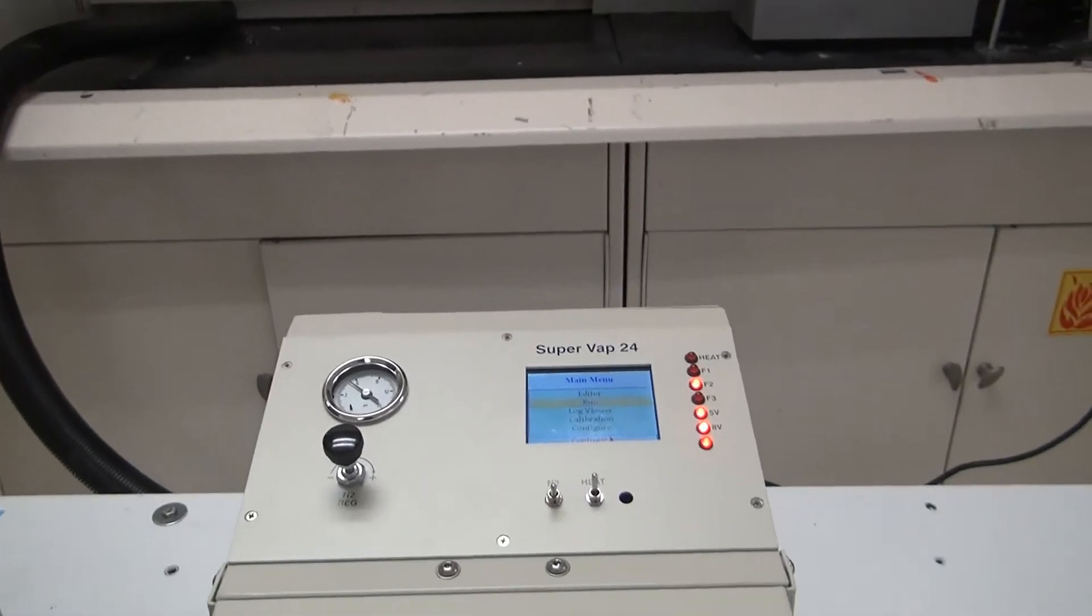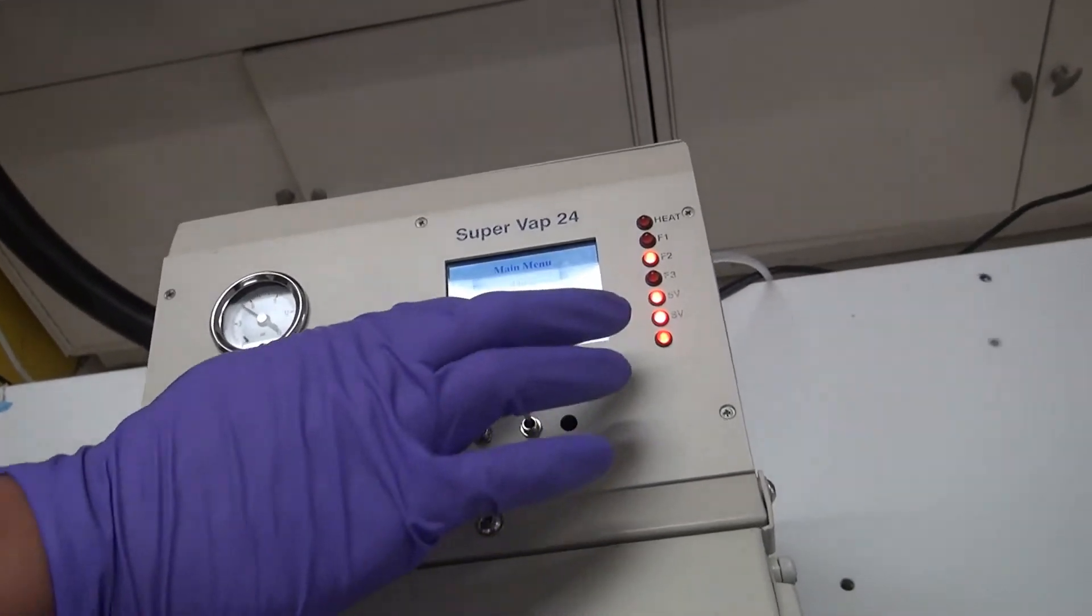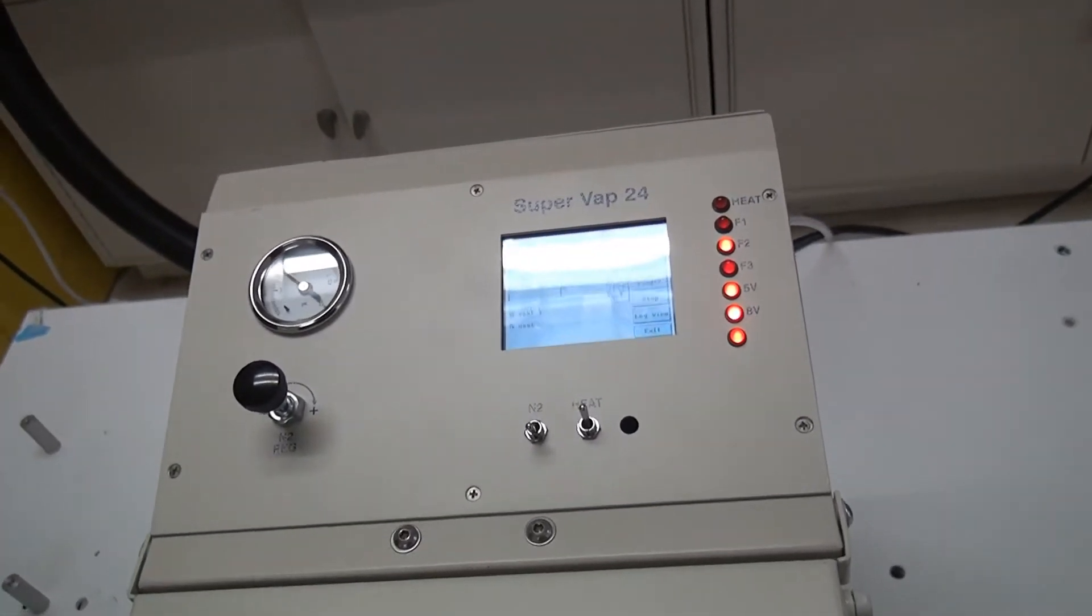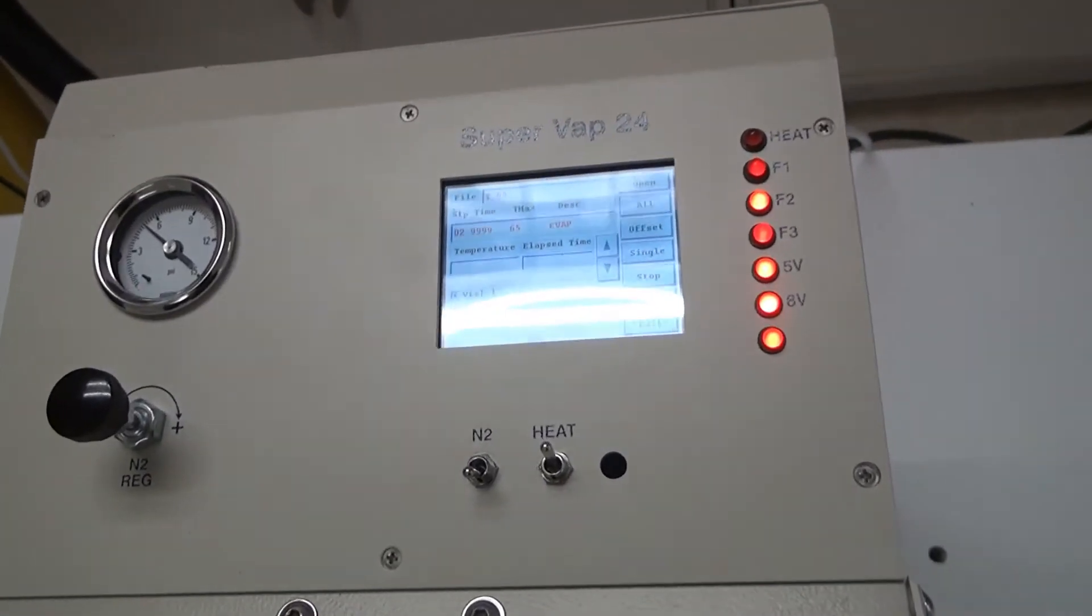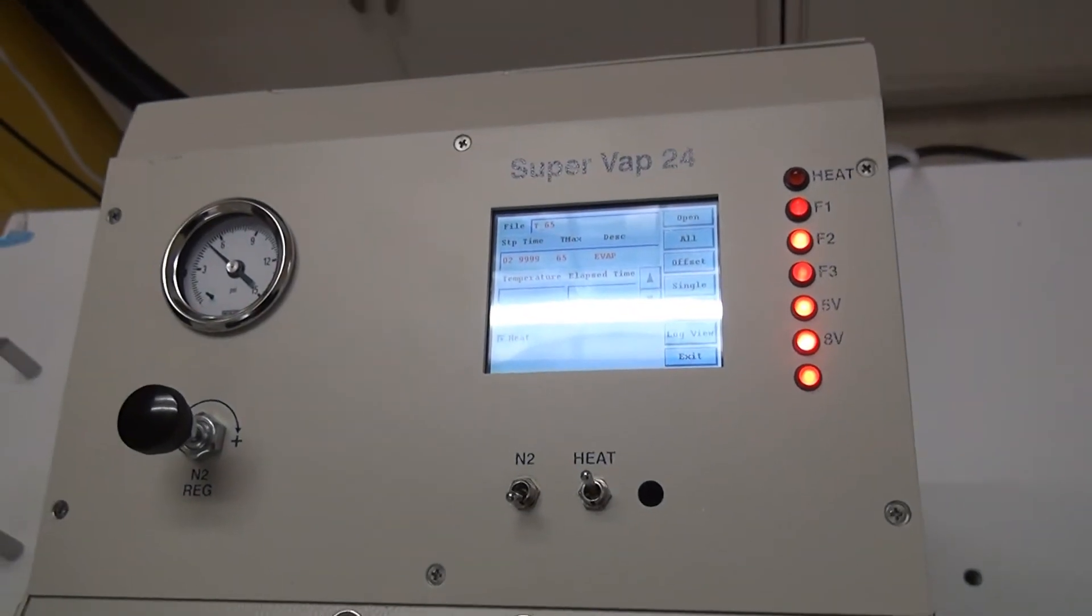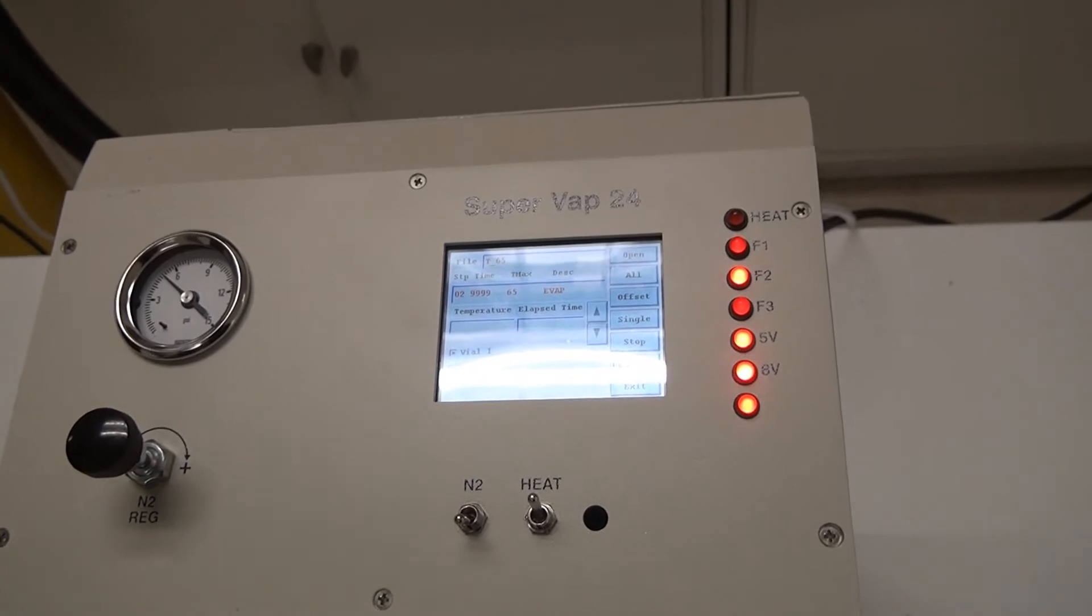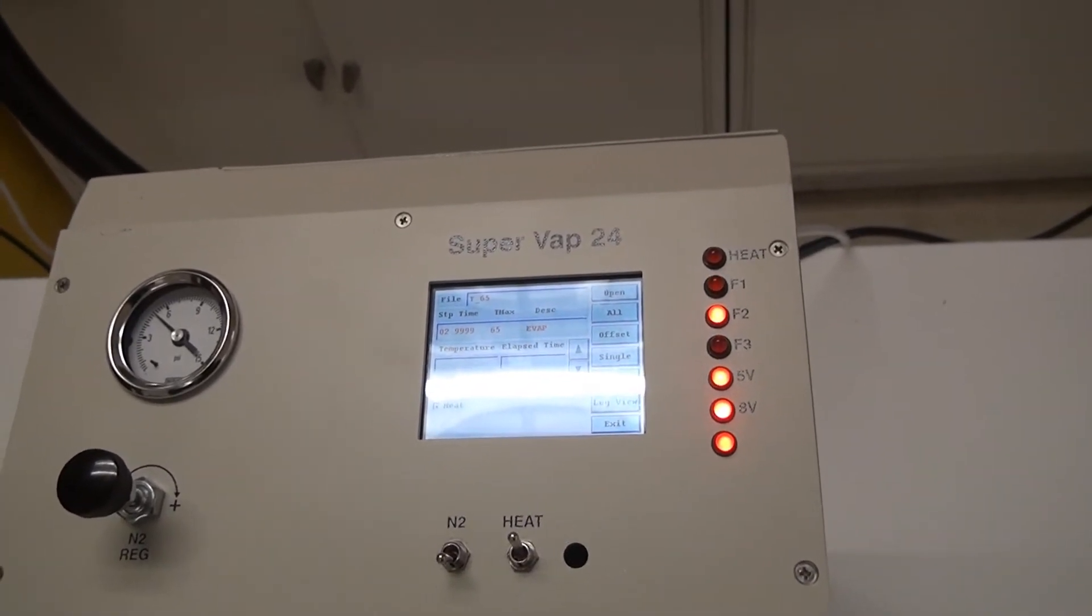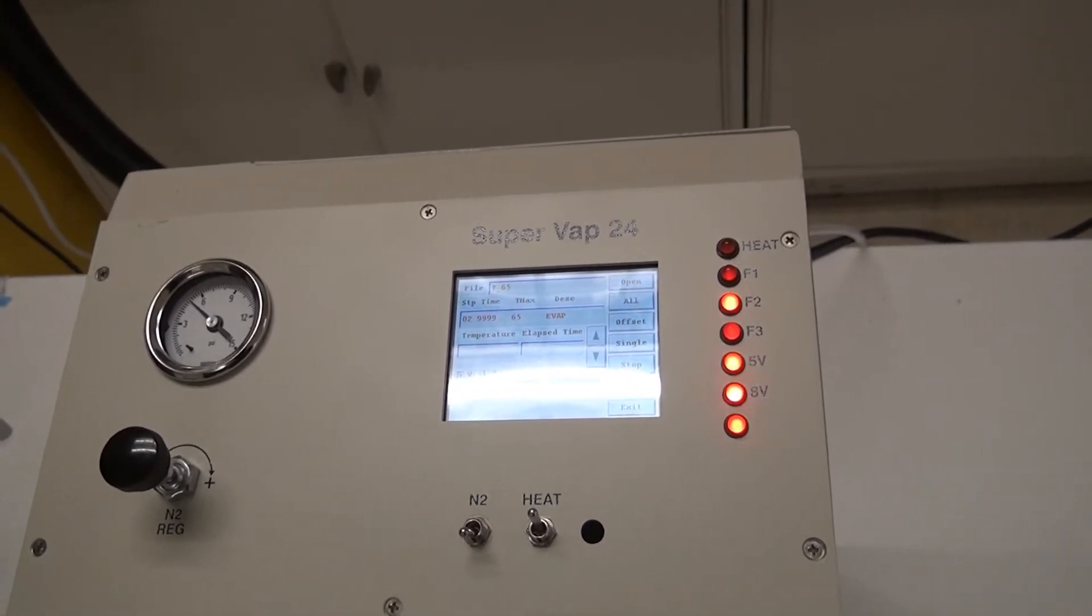And we also run at 65 degrees, so we just selected the run method and as you can see we have 65 degrees selected. We have temperatures from 35 to 80 pre-programmed here, so there's not really a lot of programming that you need to do.